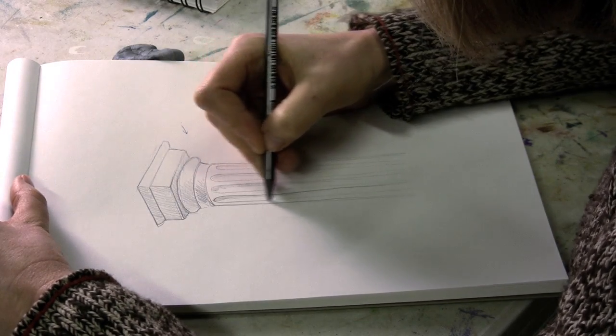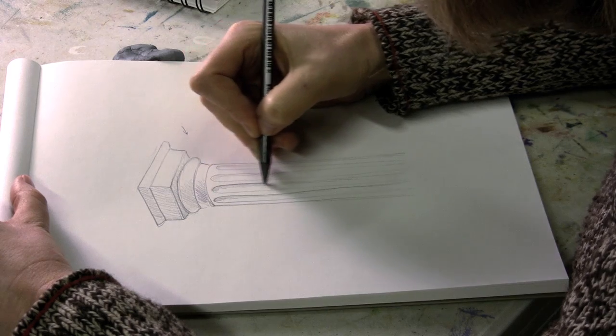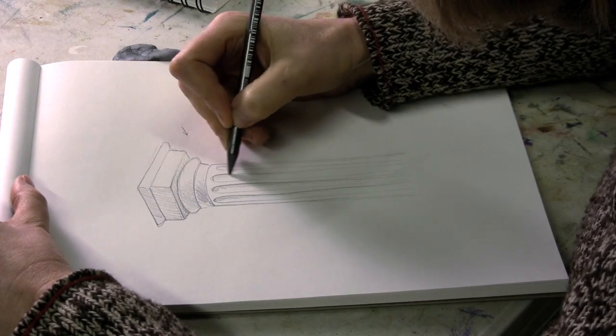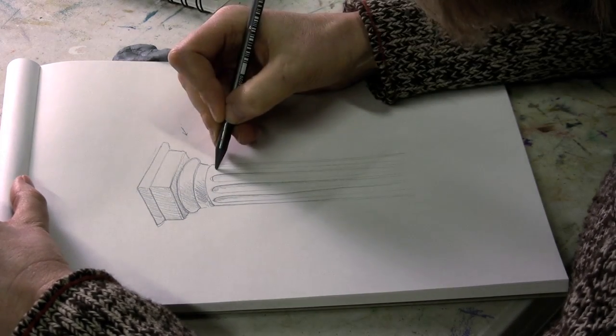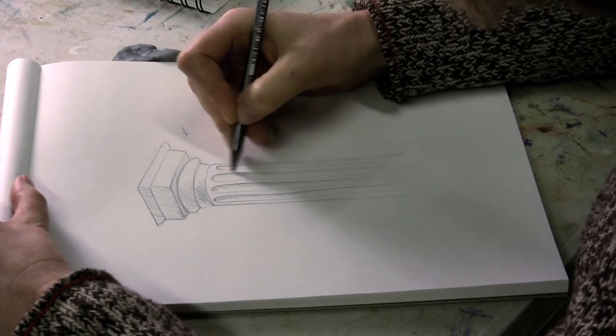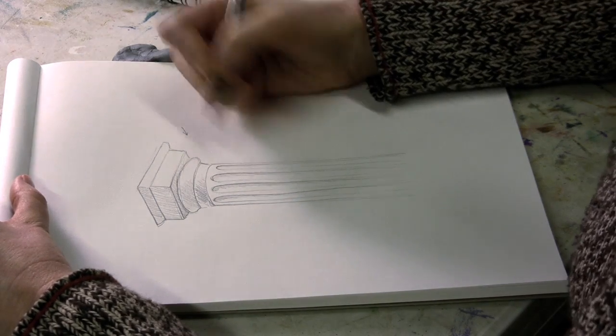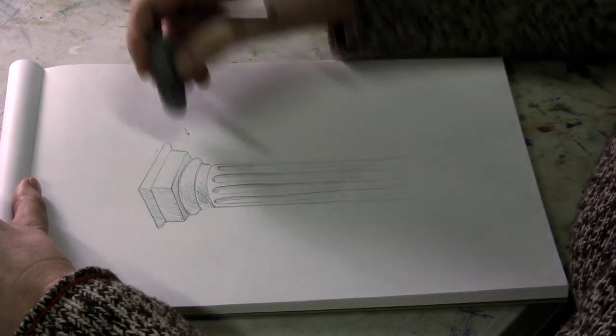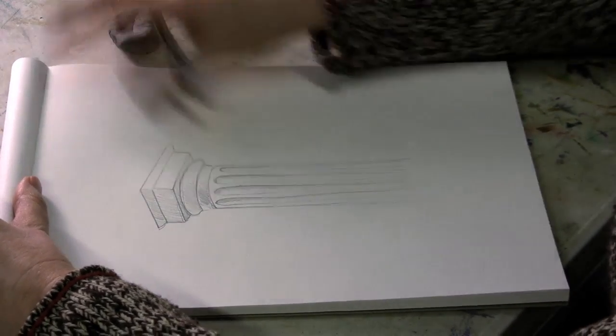And I could go make it a lot more detailed at the bottom, but the capitol is what really shows you that it is a Doric column. And this is how we draw a Doric column. Thank you.